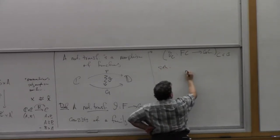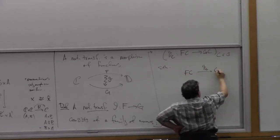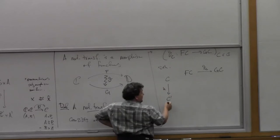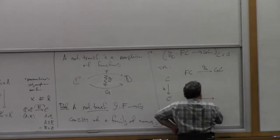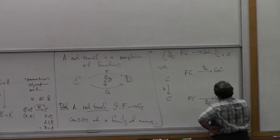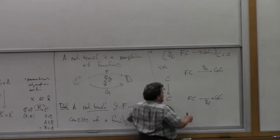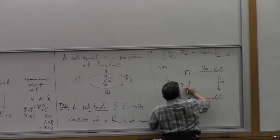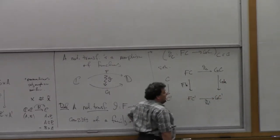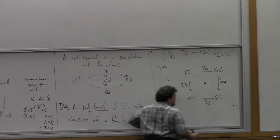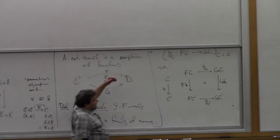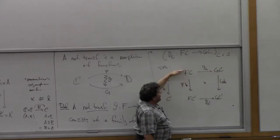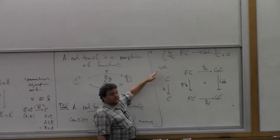Such that: for any arrow H from C to C prime over in C, I also have here F(C prime), theta at C prime, and then the action of functor F and functor G. Here's the action of functor G on H, and I want this diagram to commute. The idea is it's a way of getting from functor F over to functor G which respects the action of F on all the arrows of C.